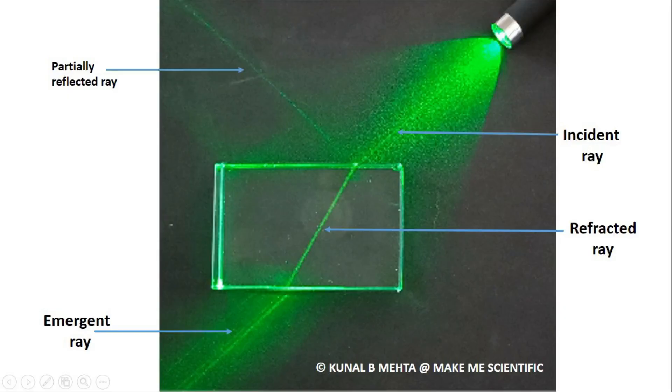In this picture we can also see a very small fraction of light that undergoes partial reflection from the top surface of the glass slab.